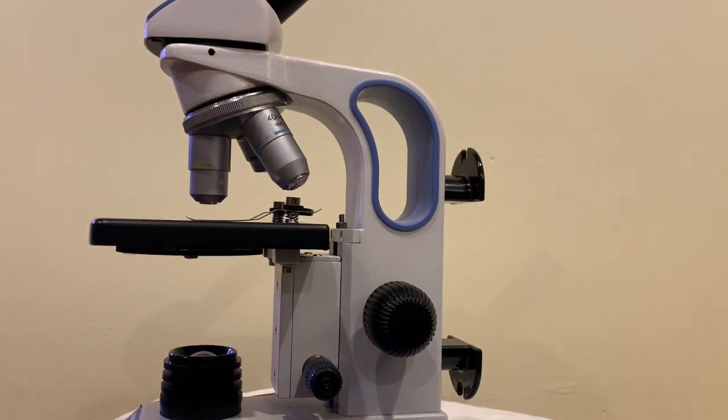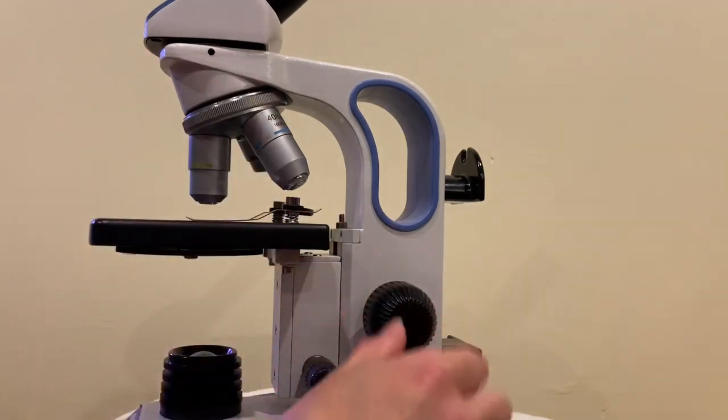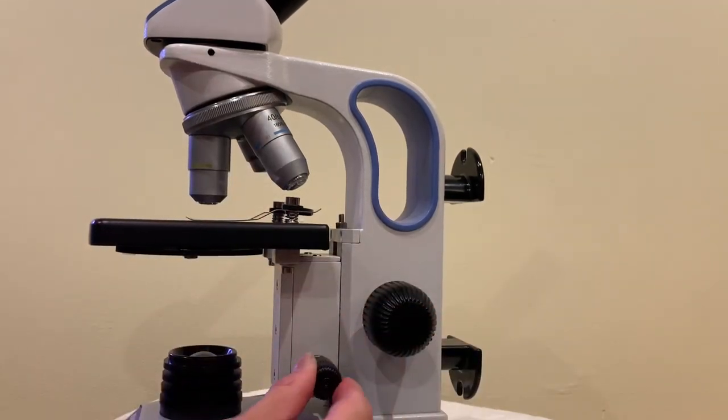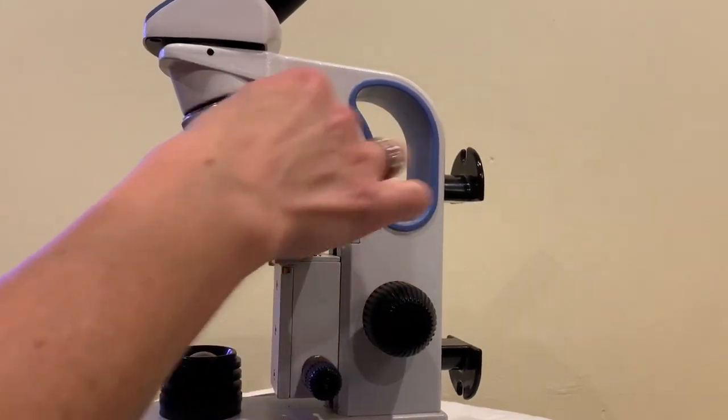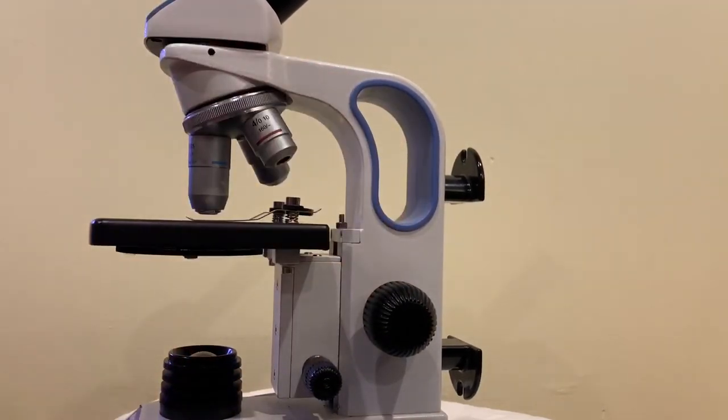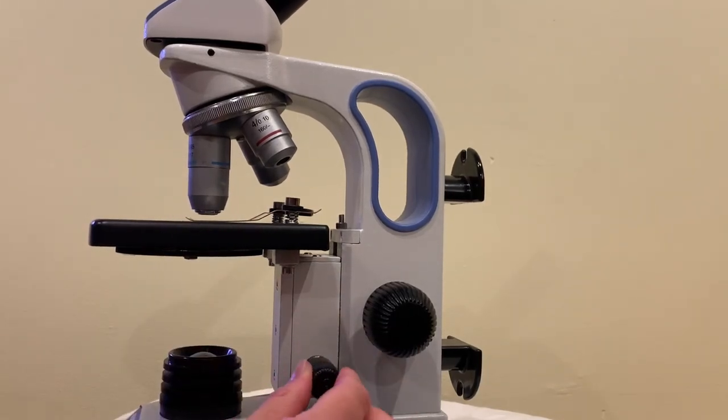Do you see how I didn't lower the stage in between? Don't do that either. Okay? And then you'll use the fine adjustment knob. Bring it into focus. And then last but not least we'll turn it to the highest objective lens and then once again fine tune your focus here.